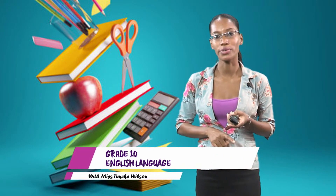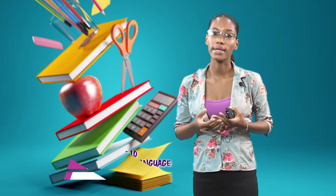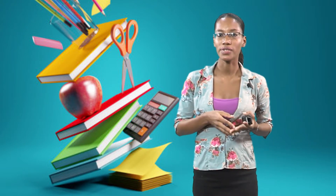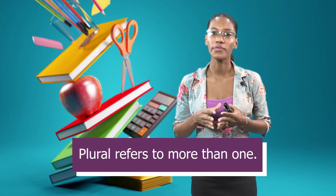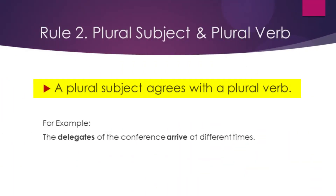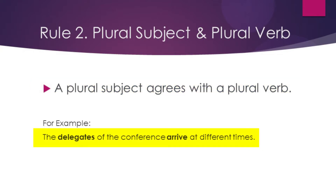Moving on to rule number two. Like rule number one, rule number two is quite common to us. We've covered singular subject, and now we're moving on to plural subject. We're still dealing with number — plural refers to more than one. A plural subject agrees with a plural verb. For example: the delegates of the conference arrive at different times. The delegates means more than one, so the subject is plural and the verb must be plural.